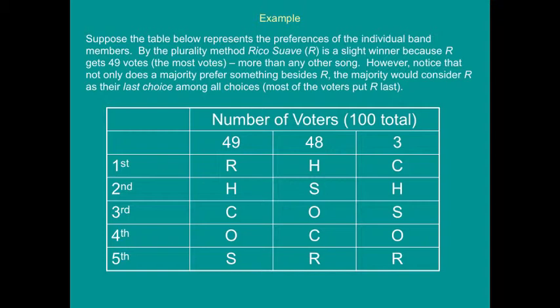The table represents the actual preferences of all voters. By the plurality method, Rico Suave (R) is the winner with 49 votes — more than any other song. However, notice that not only does a majority prefer something besides R, but a majority would consider R their last choice. 48 plus 3 is 51 voters — a majority — and they actually have R as their last choice among all five options. So in spite of that, R wins by plurality.